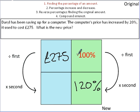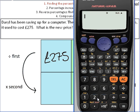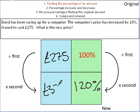We know that we divide by the first value, which is 100, and we times by the second value, which is 120. So clear screen. 275 is your original amount. Divide by 100 times by 120. The new price of the computer is 330 pounds. Again, that's your question finished.